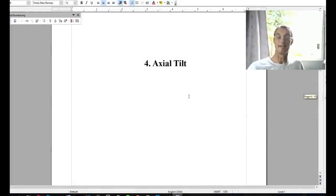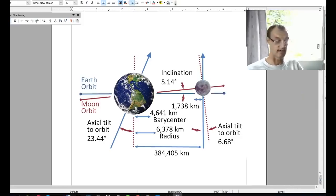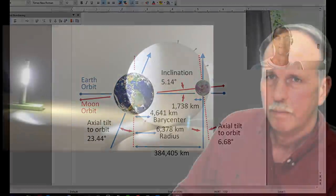Number four, axial tilt. This assumption that the Earth is tilted and as it goes around the sun, we get the seasons because of this axial tilt. This is something that can never, ever, ever be verified whatsoever.